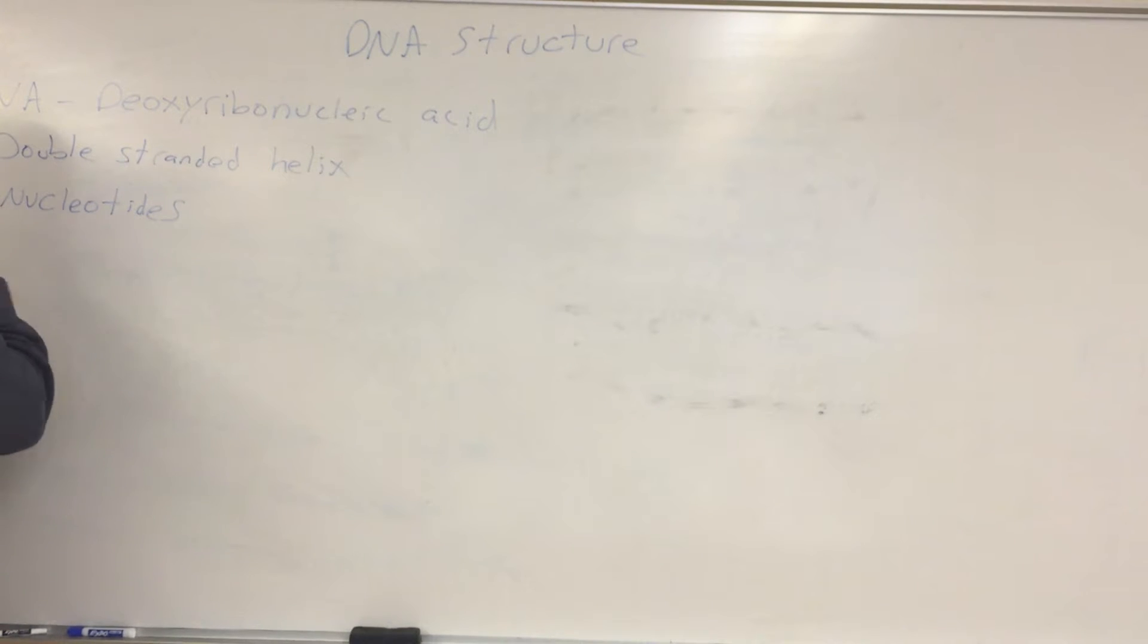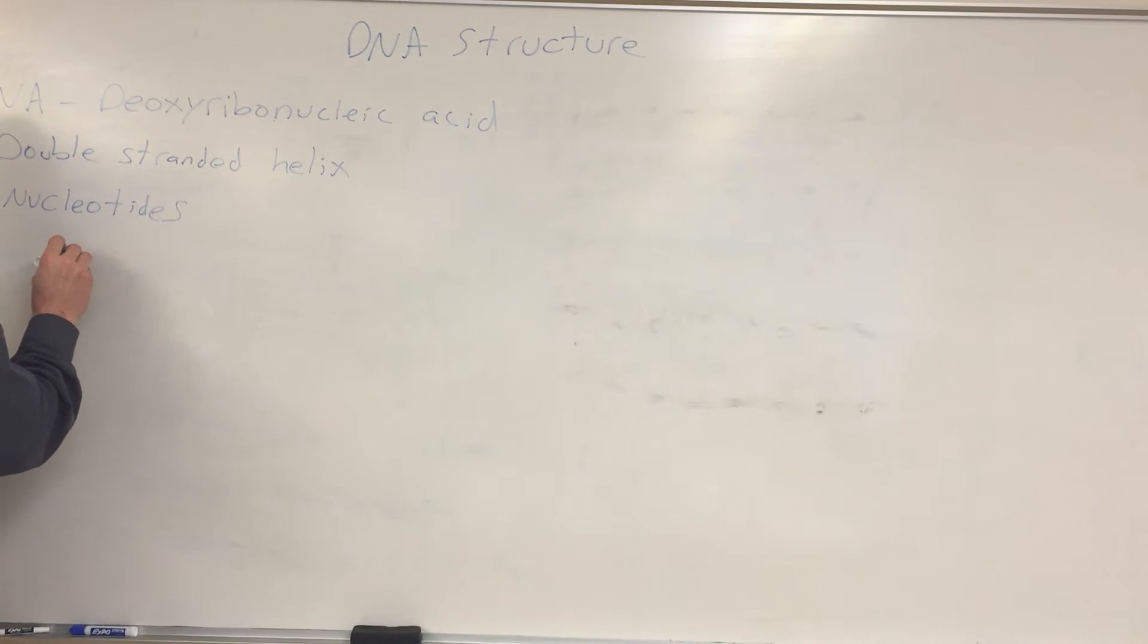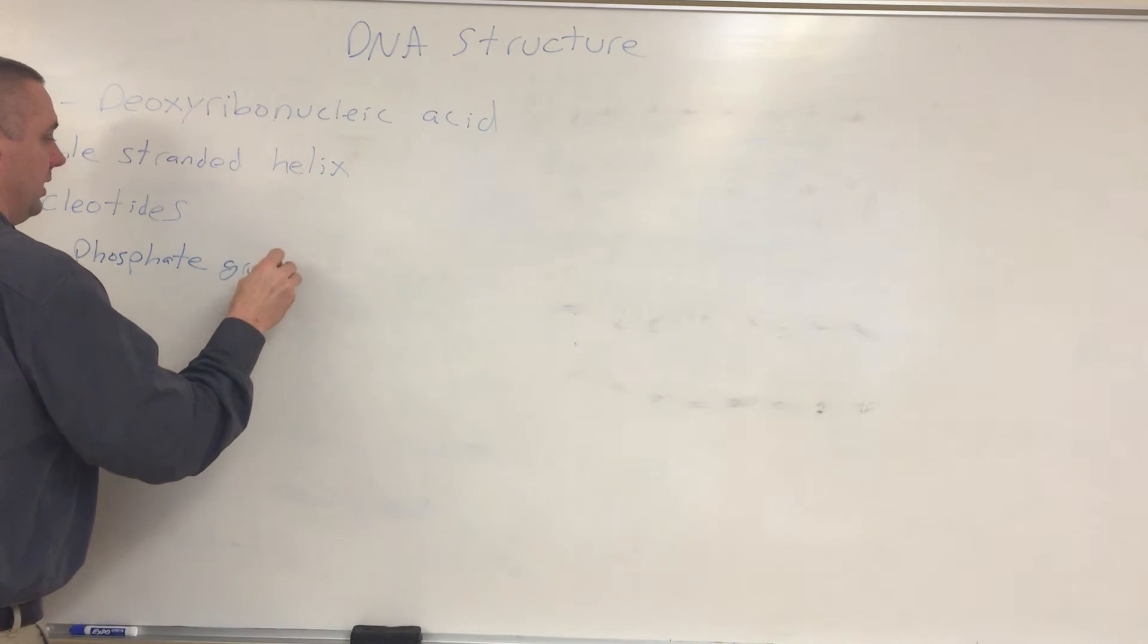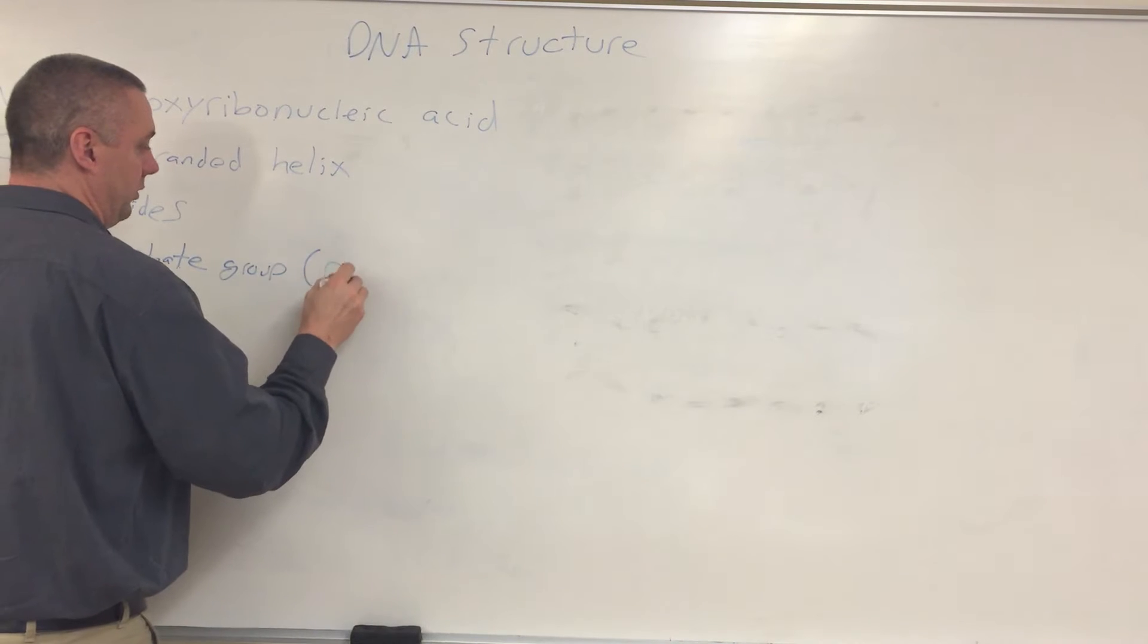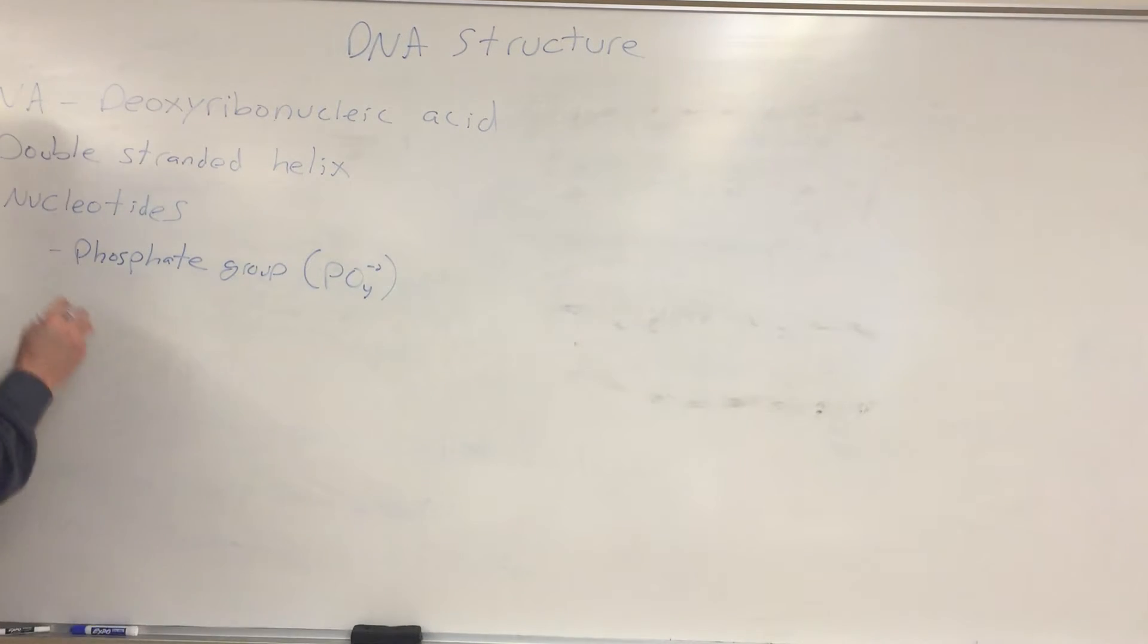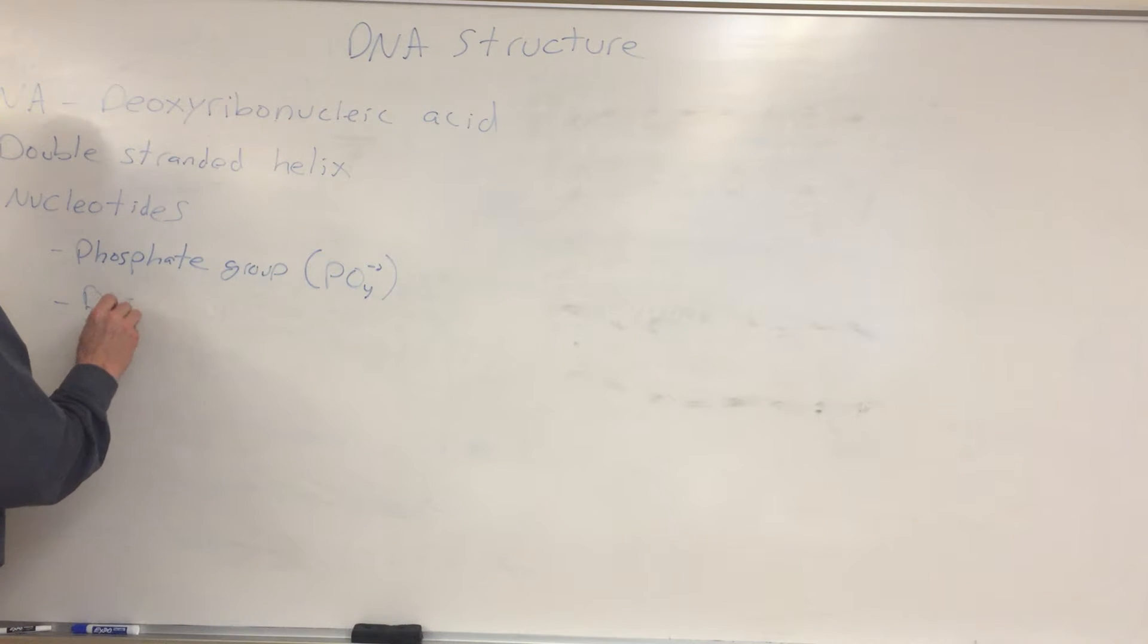A nucleotide is made up of a phosphate group. Phosphate group, so PO4 2-. It also has a sugar. It's a five-carbon sugar called deoxyribose.